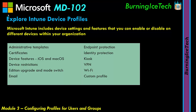Companies often force users to upgrade because older editions are seen as non-compliant and a security risk, making the company vulnerable. You can also configure email, endpoint protection, identity protection, kiosk settings, and VPN for remote workers — which is most people these days.